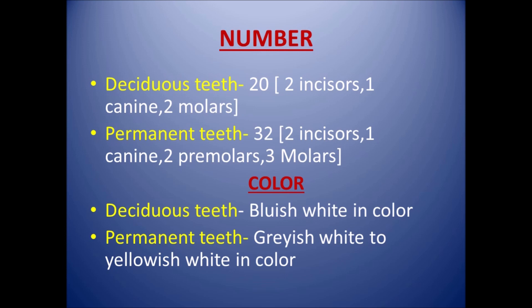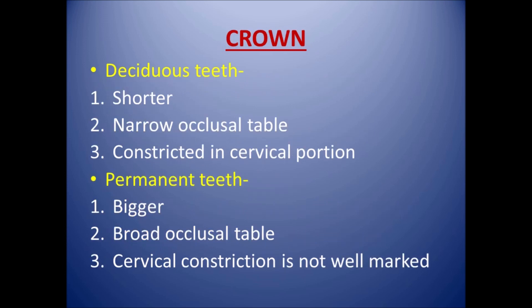Coming to color, deciduous teeth are bluish white in color, while permanent teeth are grayish white to yellowish white. Regarding the crown, in deciduous teeth the crown is shorter, while in permanent dentition the crowns are bigger. In deciduous dentition, a narrow occlusal table is present, while it is broad in permanent teeth. The cervical portion is constricted in deciduous teeth, but in permanent dentition cervical constriction is not well marked.